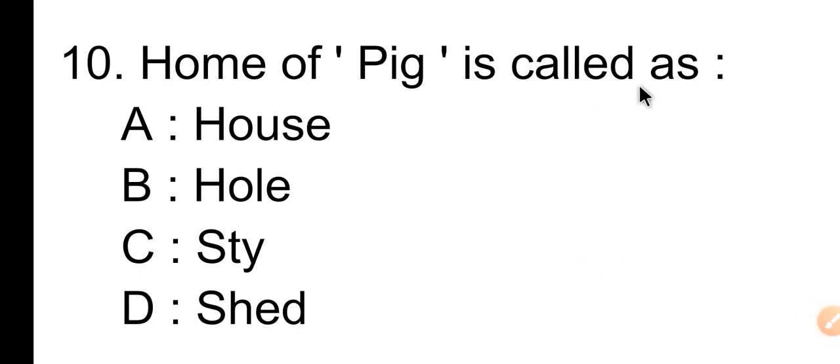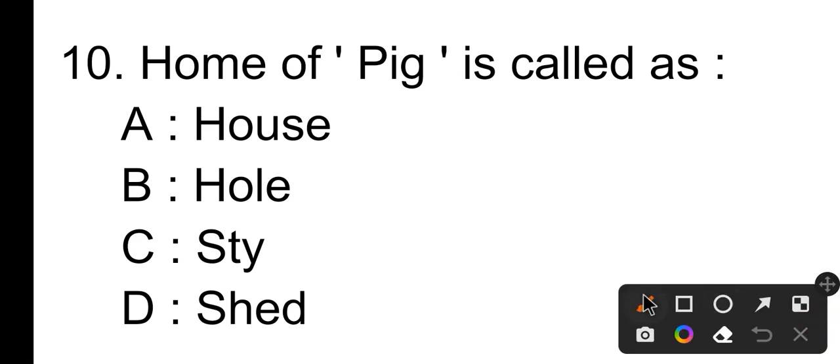Question number ten: the home of pig is called as — Option A is house, Option B is hall, Option C is stye, Option D is street.